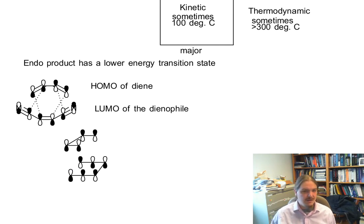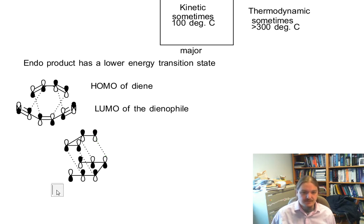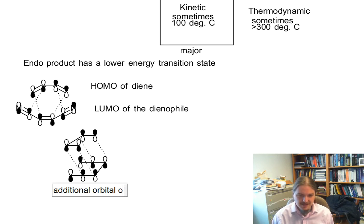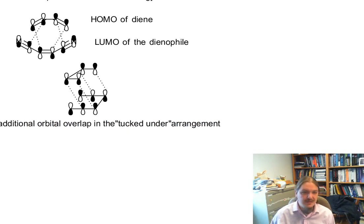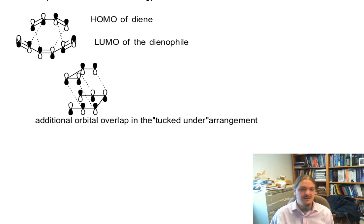Here is a side-on view of the approach, and you can get a better picture of the overlap that occurs between the tucked-under positions — between the diene and the dienophile. This additional orbital overlap in the tucked-under arrangement is what stabilizes the transition state leading to the endo product.